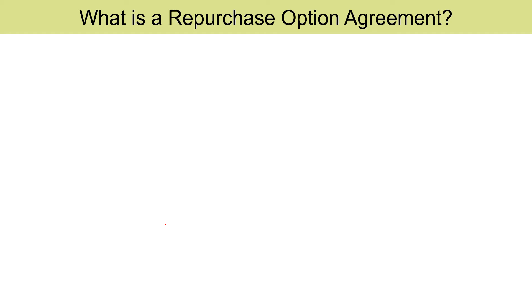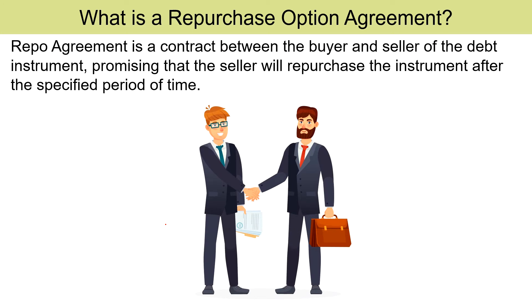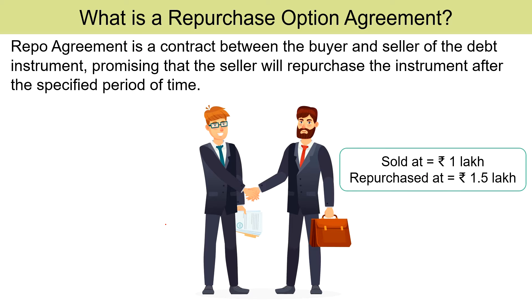Before understanding the difference between Repo Rate and Reverse Repo Rate, first of all you should understand the basics — that is, what is a Repurchase Option Agreement. A Repurchase Option Agreement or Repo Agreement is a contract between the buyer and seller of the debt instrument, promising that the seller will repurchase the instrument after the specified period of time. It requires the seller to repurchase the securities at a higher price than the price at which it was actually sold.